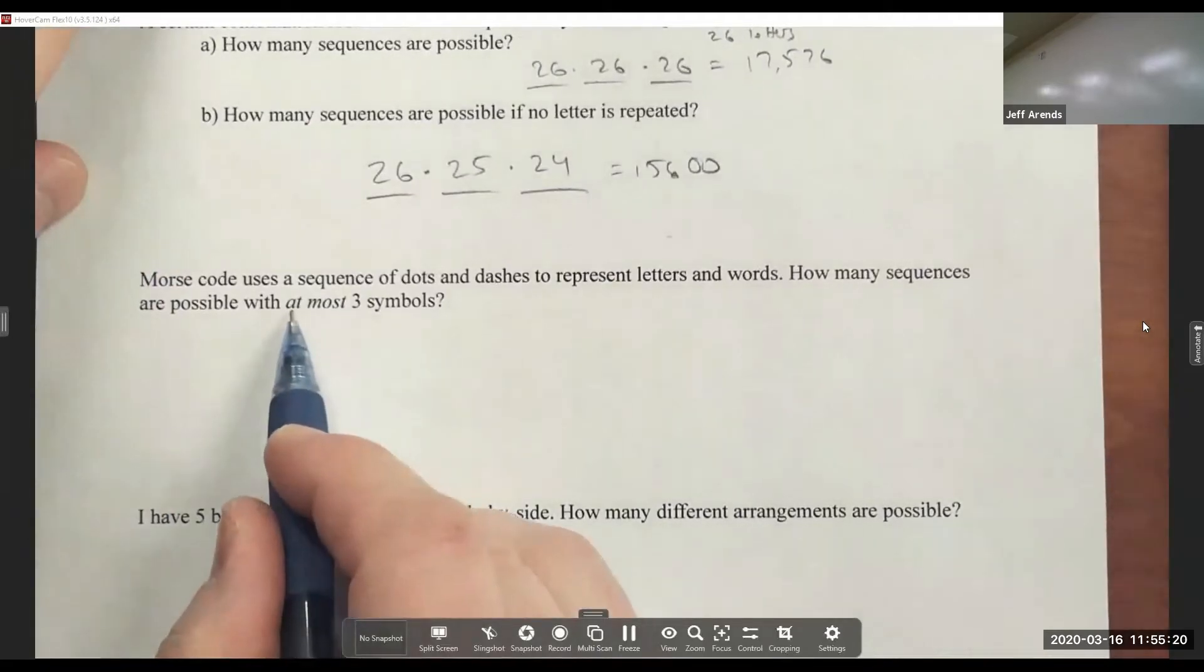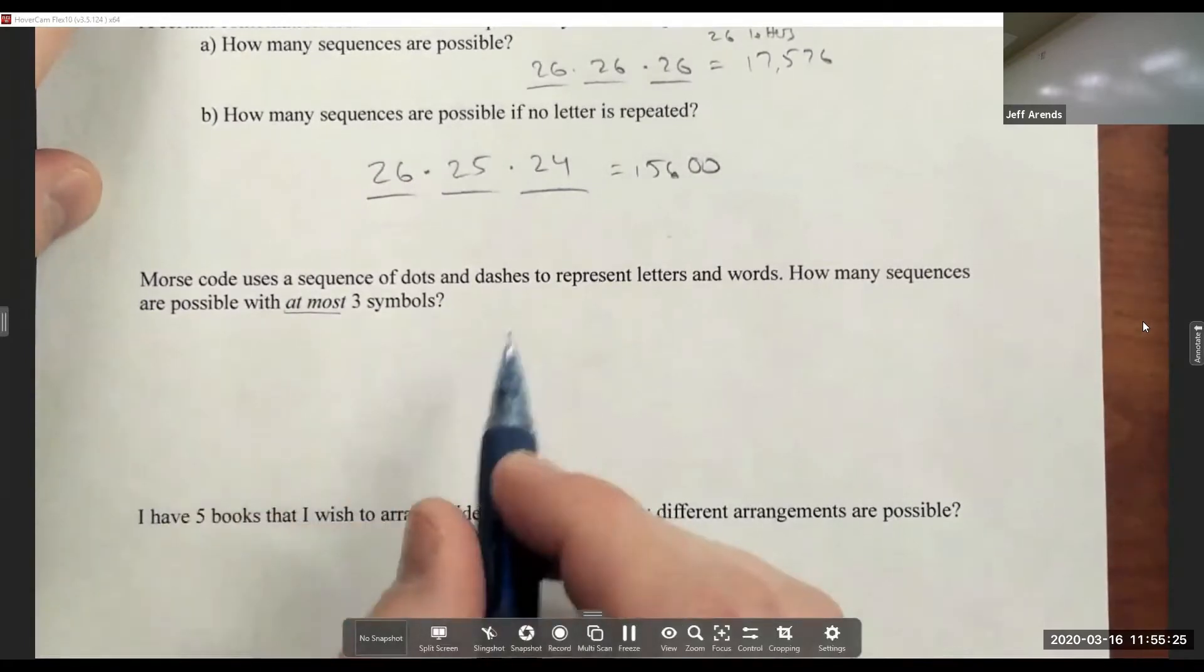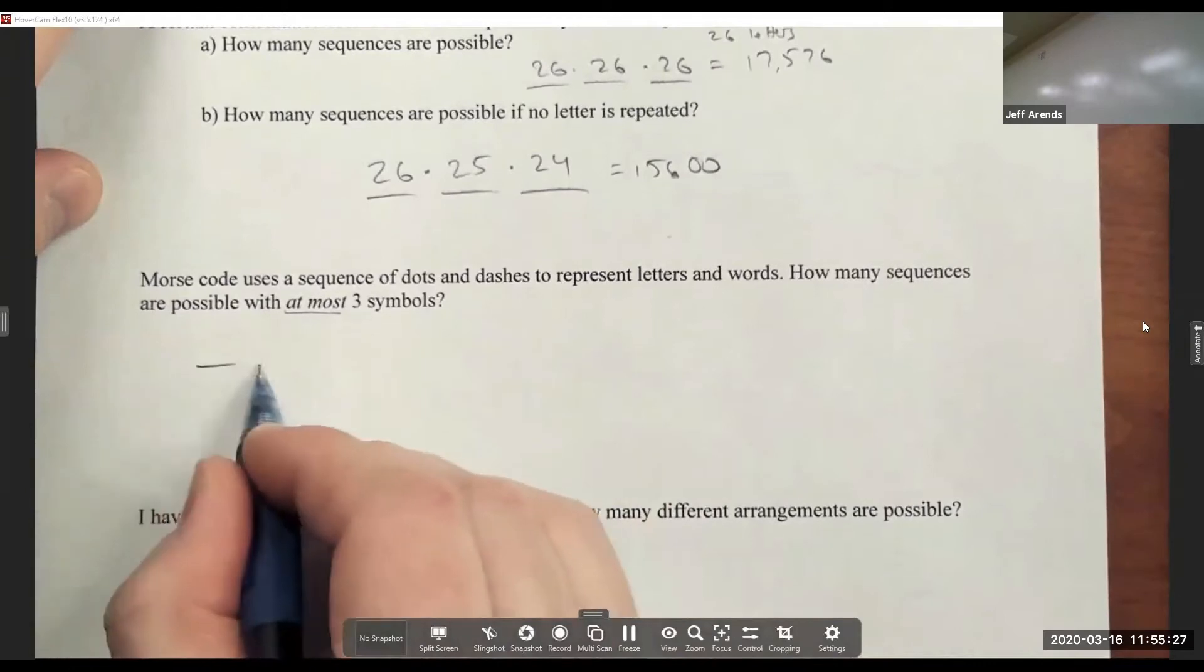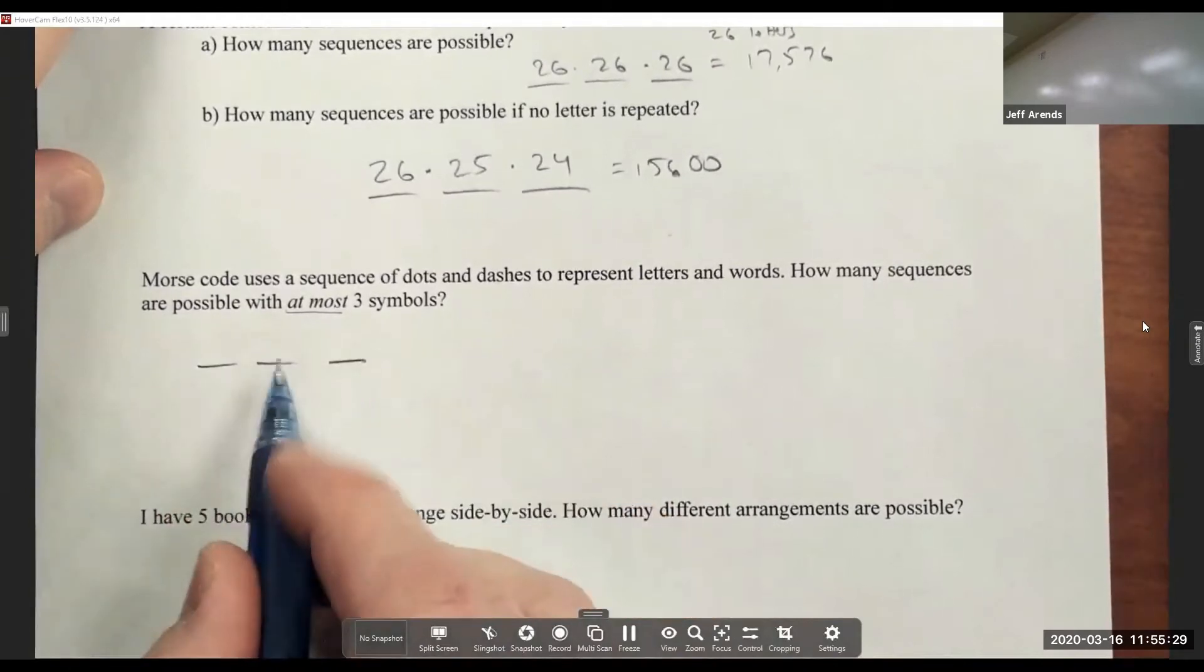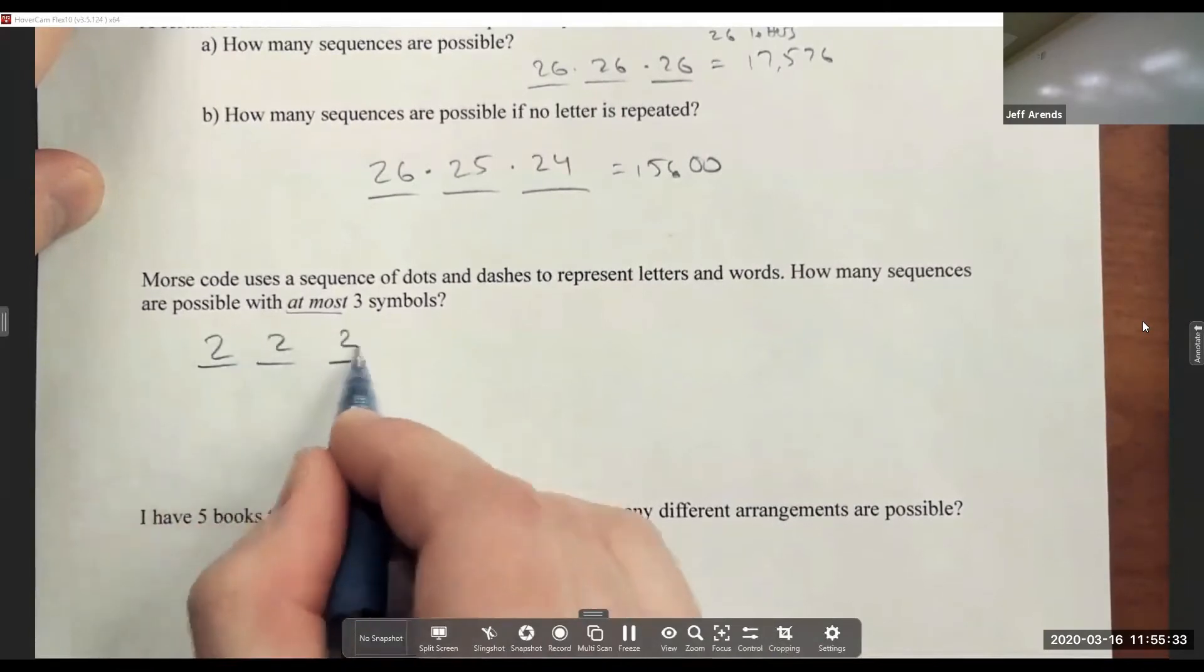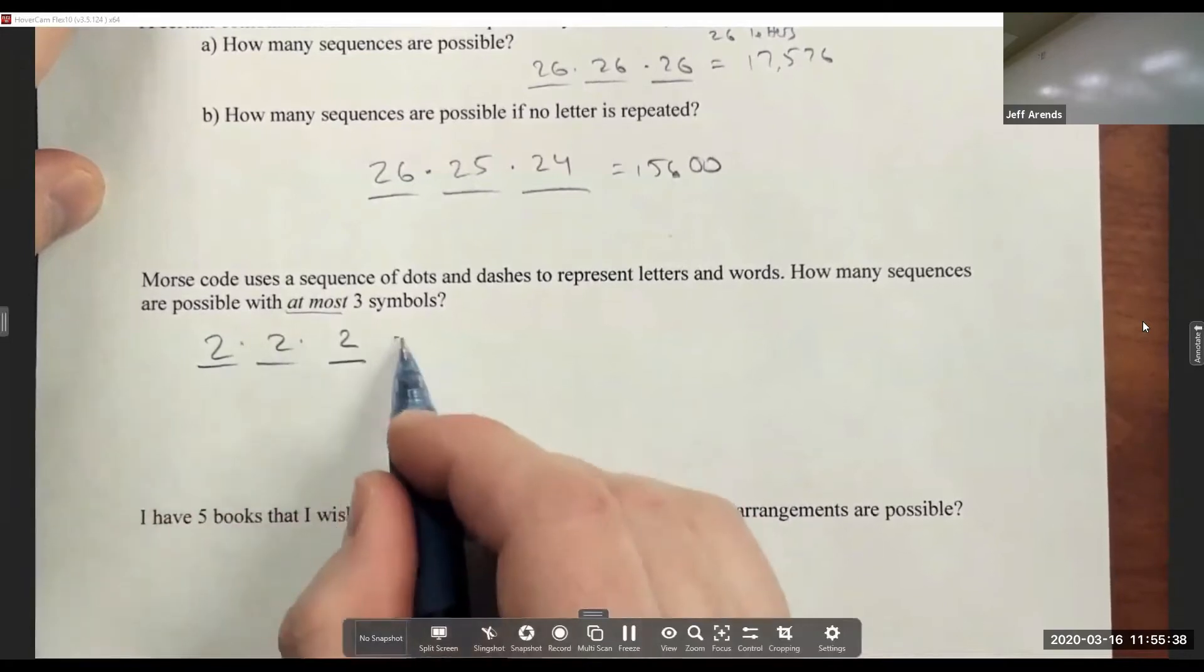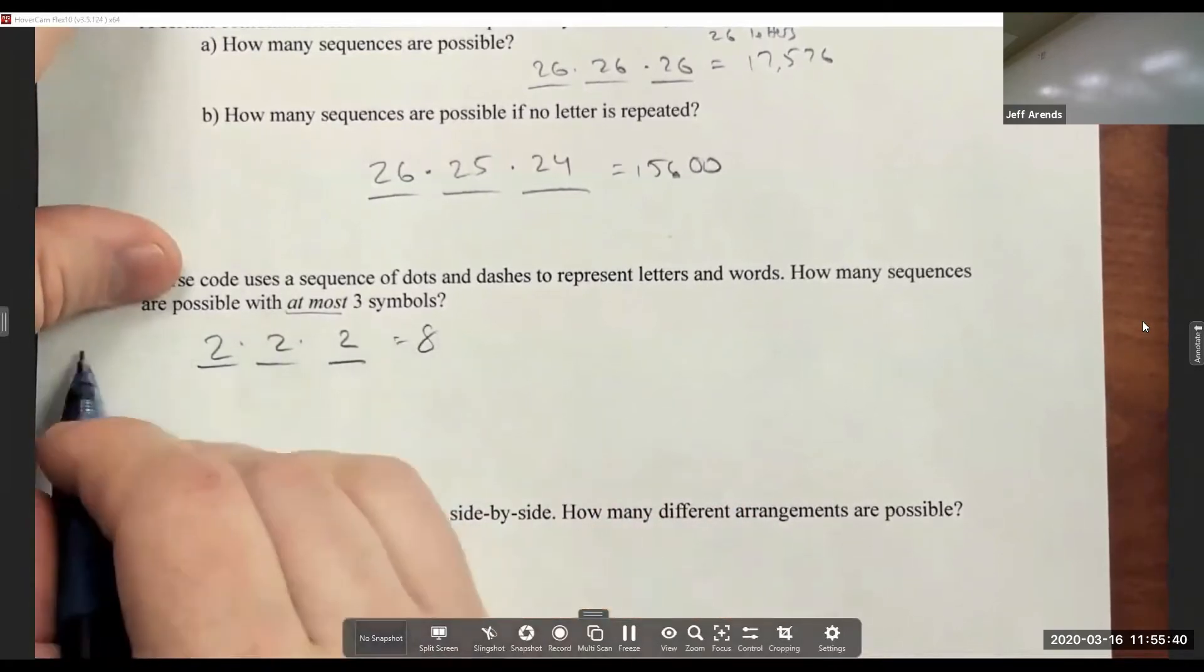First I want to key into this 'at most three symbols.' If we're dealing with exactly three symbols, then there's two different ways we could go with each choice. I could do a dot or a dash, a dot or a dash, and a dot or a dash. So there would be eight different ways with exactly three.